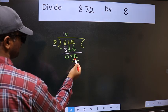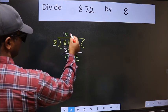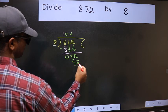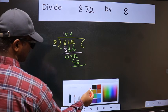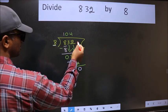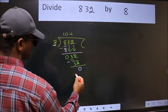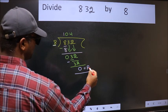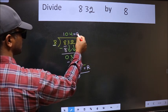Now 32. When do we get 32 in the 8 table? 8 times 4 equals 32. Now we should subtract. We get 0. No more numbers to bring down, so we stop here. This is our remainder and this is our quotient.